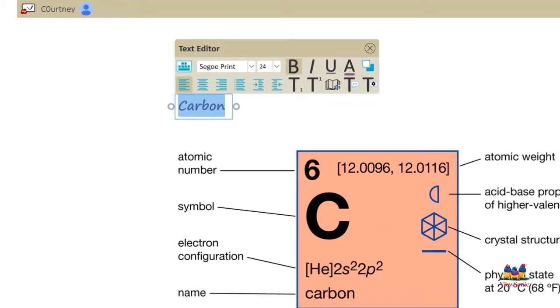After you've selected the font you would like, you can also change the font size by going to that 24 and directly to the right of that, hitting the down arrow and selecting whatever font size you would like.